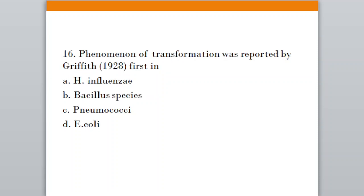Question number sixteen: The phenomenon of transformation was reported by Griffith in 1928 — first in which microorganism? Option A, Haemophilus influenzae; Option B, Bacillus species; Option C, Pneumococci; Option D, E. coli. The correct answer is option C, Pneumococci.